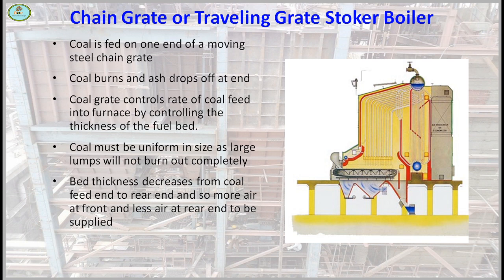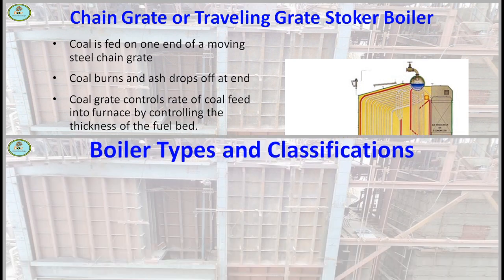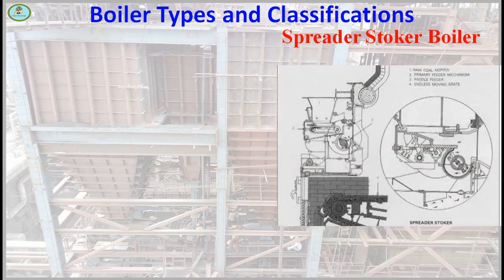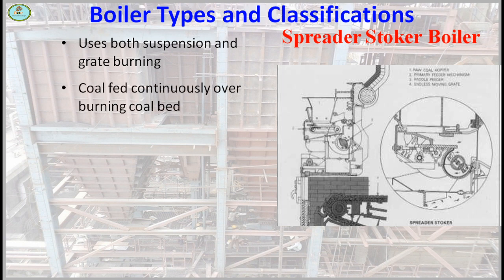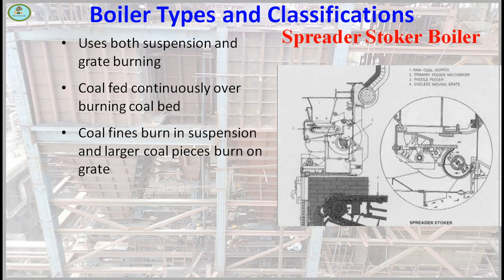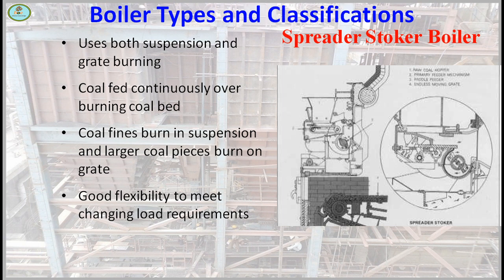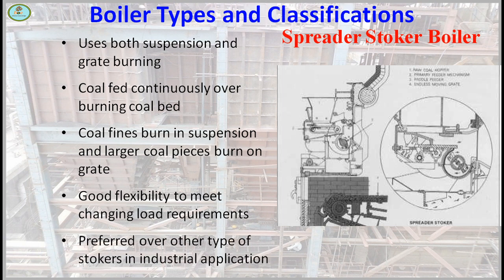Bed thickness decreases from the coal feed end to the rear end, so more air is supplied at the front and less air at the rear end. Spreader stoker burners: this type of boiler uses both suspension and grate burning. Coal is fed continuously over a burning coal bed. Fine coal finds burning in suspension and large coal pieces burn on the grate. Good flexibility to meet changing load requirements — preferred over other types of stokers in industrial applications.